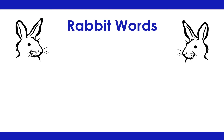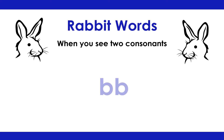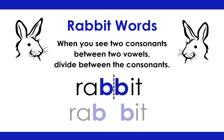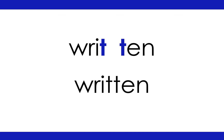Rabbit Words: When you see two consonants between two vowels, divide between the consonants. Rabbit: Rab-bit. After: Af-ter. Written: Writ-ten.